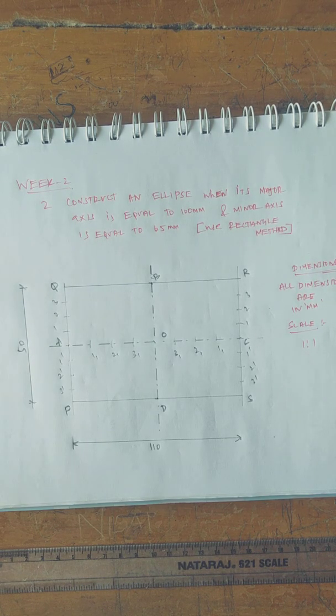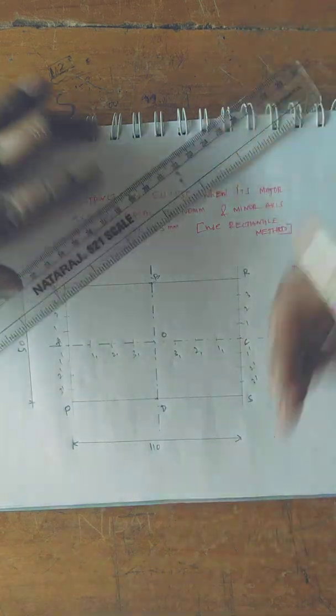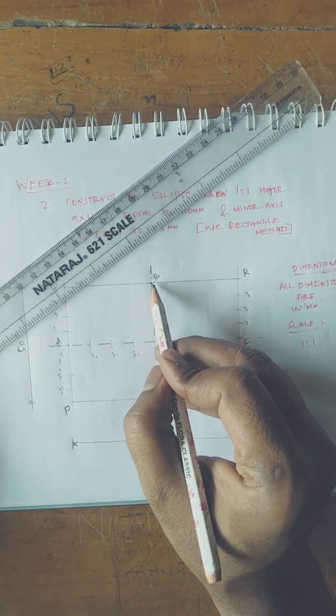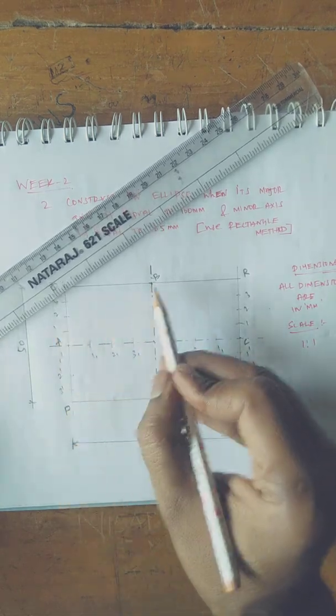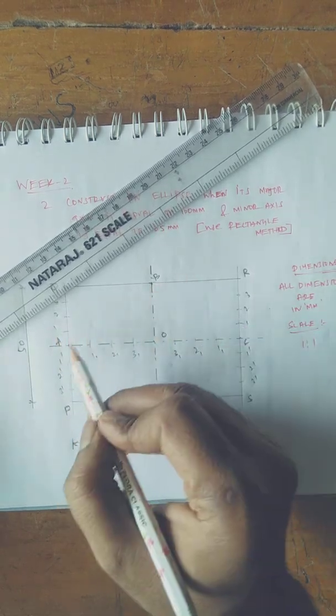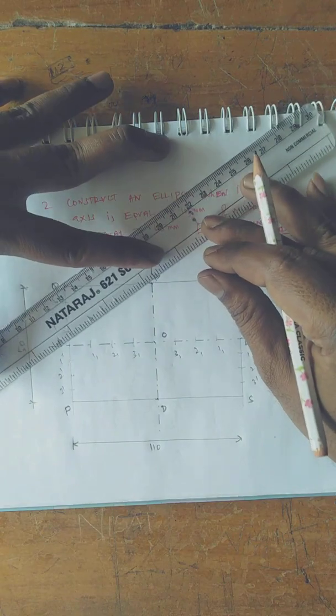Now what we need to do is connect from the edges of minor axis B to all the points which we have marked in this particular portion of the rectangle.